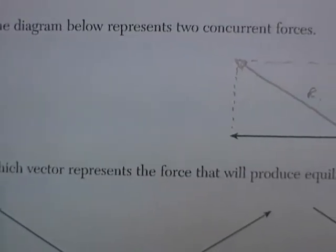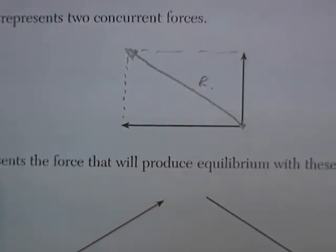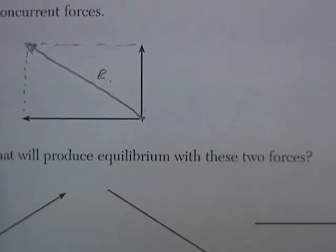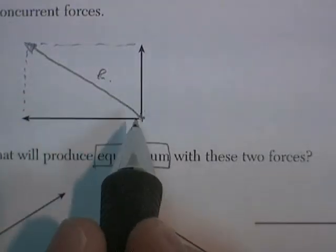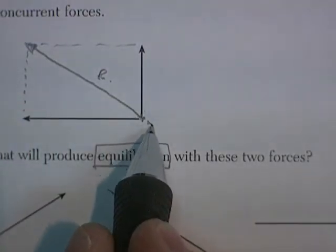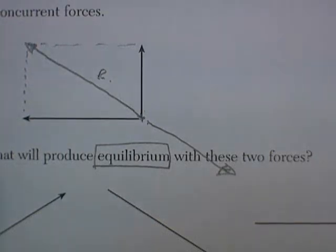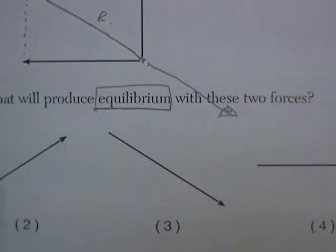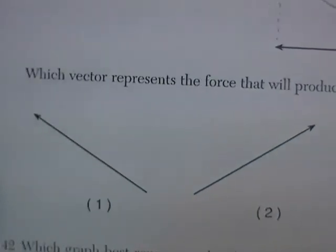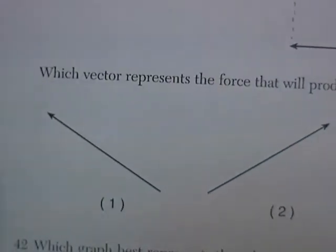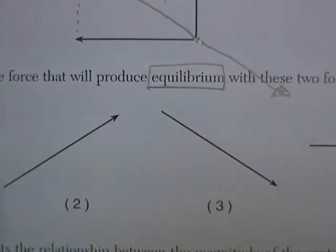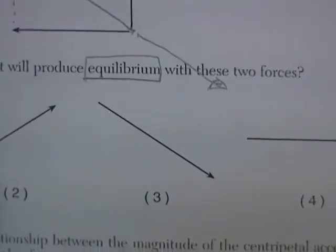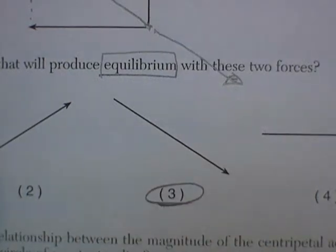Which vector represents the force that will produce equilibrium with these two forces? Equilibrium is achieved when they're balanced. So if this is the resultant, a force going in the opposite direction would produce equilibrium. Number one would be the resultant. Two doesn't make any sense. Three would produce equilibrium. Four doesn't make any sense. So the correct answer has to be three.